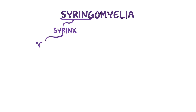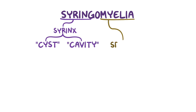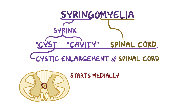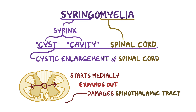In syringomyelia, syrinx means cyst or cavity, and myelia means a condition of the spinal cord. So syringomyelia is a cystic enlargement of the spinal cord, and it typically starts medially and enlarges outward, eventually damaging the spinothalamic tract, which is a part of the spinal cord that sends sensory signals about pain, pressure, temperature, and touch to the brain.